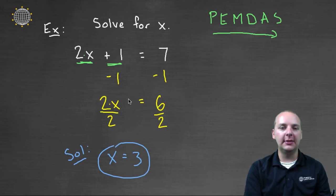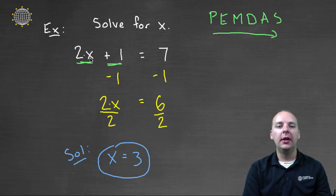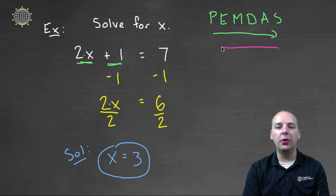Again, it's exactly like I said earlier — the operations are undone in exactly the reverse order that they're applied to x.